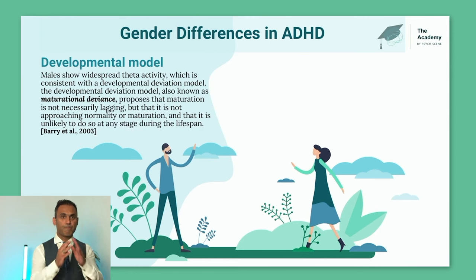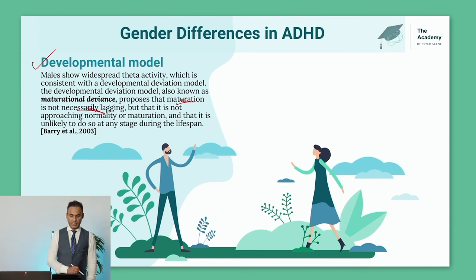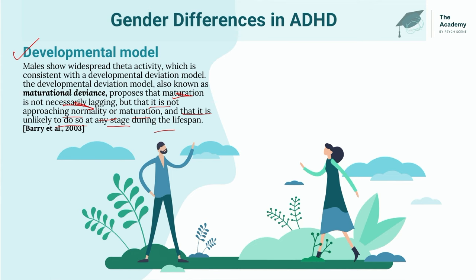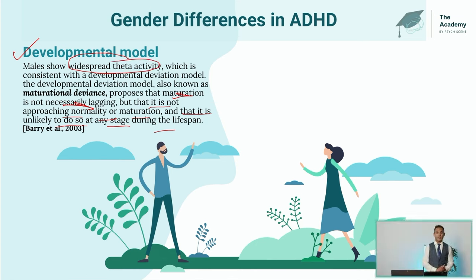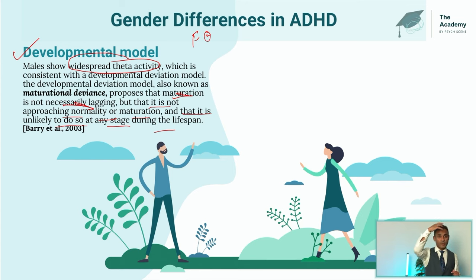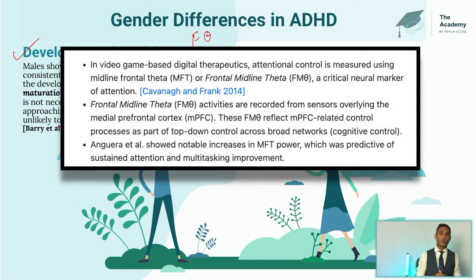Gender differences are really important — males have a very different phenotype, even from an EEG perspective. What you see here is known as a developmental deviation model, where maturation is not necessarily lagging but is not approaching normality and is unlikely to do so at any stage during the lifespan. For males with a significant ADHD phenotype, there is widespread theta activity. Frontal theta — four to seven hertz, just above delta — is a marker for improvement and reflects good frontal top-down inhibition, which is what they measure in the Endeavor treatment.